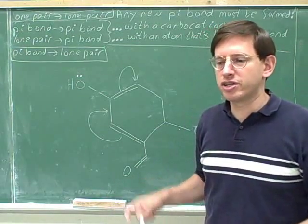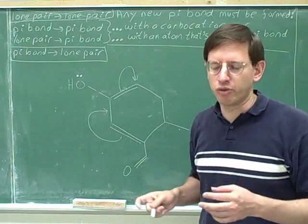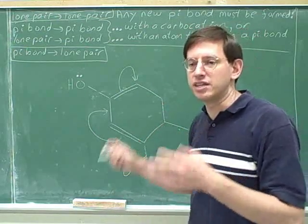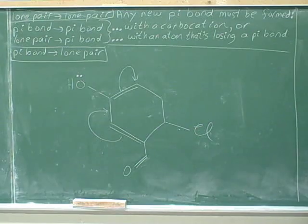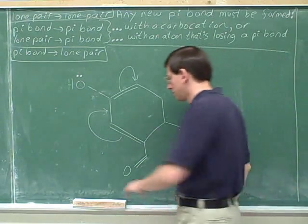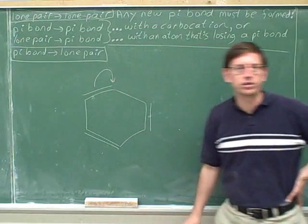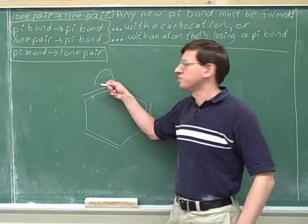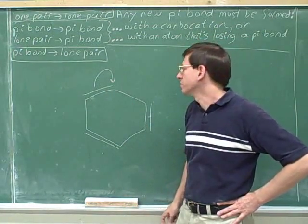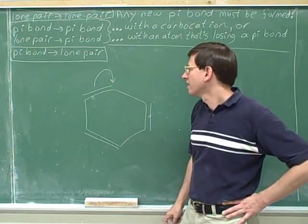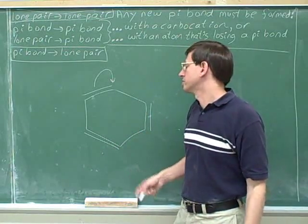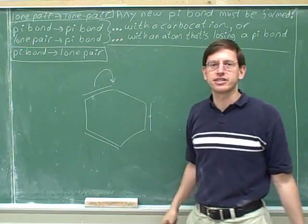Remember that a lot of the transitions shown here would not really be very significant — you might not actually draw them in real life. But our goal here is just to practice making legal arrows that don't exceed an octet. This forms a lone pair, so that's okay. We don't need to worry about forming lone pairs. This does not exceed an octet.